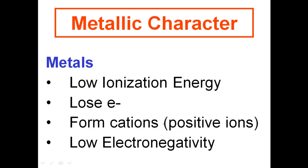On the left side of the periodic table, I have low ionization energy. That's the energy needed to remove an outer shell electron. Because they have very low ionization energy, they're going to lose their electrons and form positive ions known as cations.